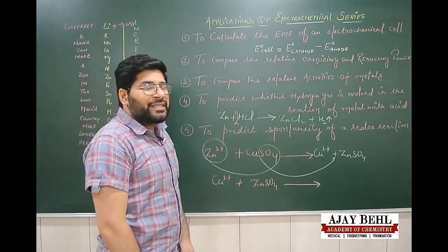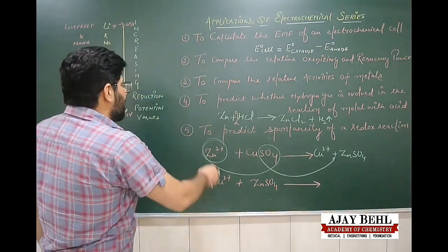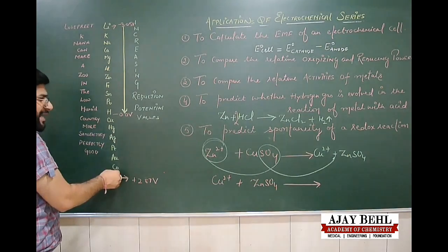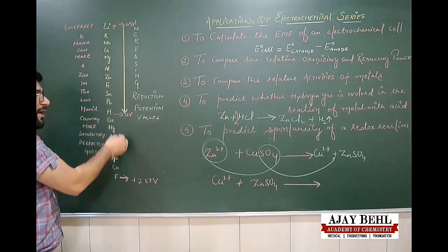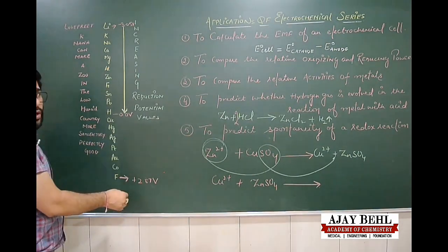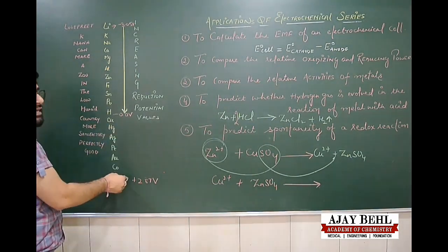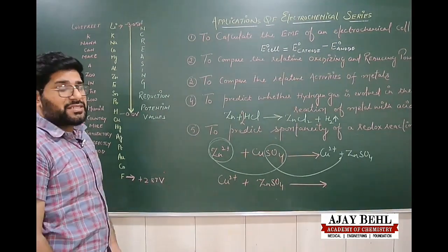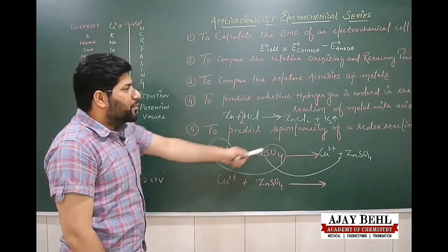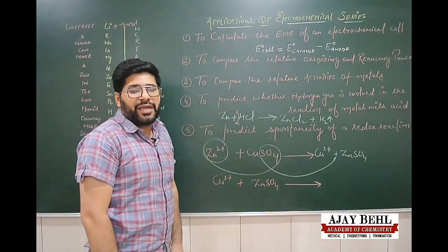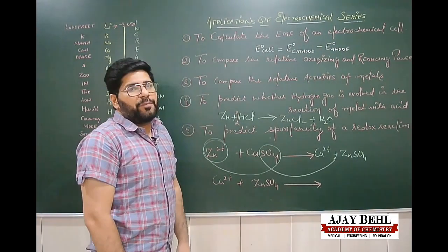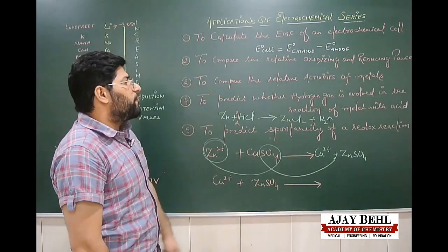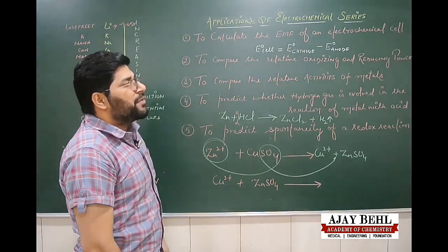On the other hand, if HCl is reacted with elements that appear below hydrogen in the electrochemical series, hydrogen gas will not be evolved. This is the fourth application of the electrochemical series.